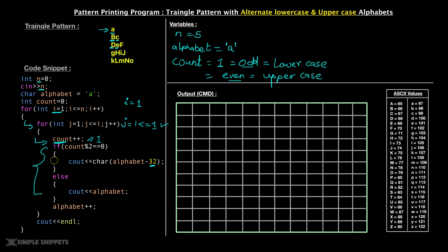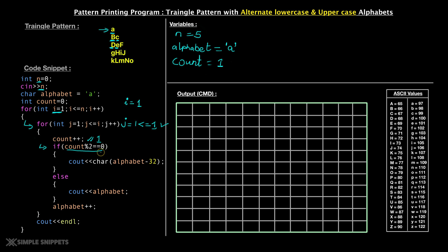So in the if-else: if count mod two equals zero, this is true when count is even. Currently count is one — one is odd, so one mod two is not zero, it equals one. This if block is not executed, we go into the else block and say cout alphabet. Alphabet is lowercase a, so a is printed on the first line. Then we say alphabet plus plus — a was 97, plus plus makes it 98, which is lowercase b. So alphabet now becomes b.